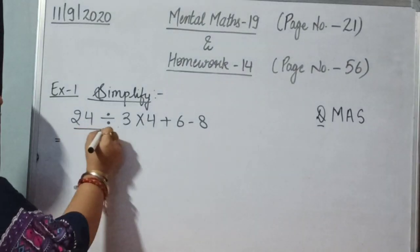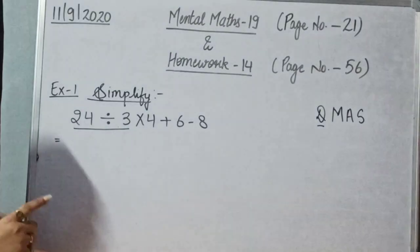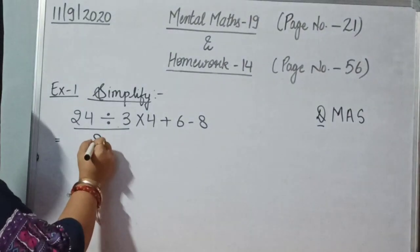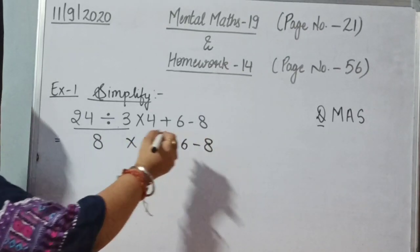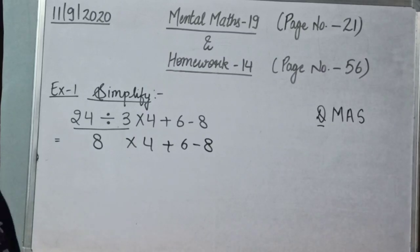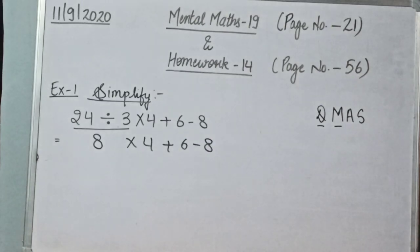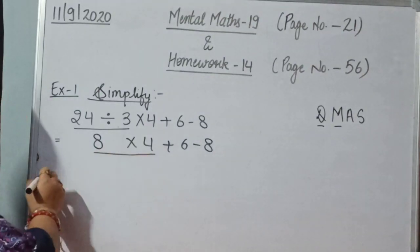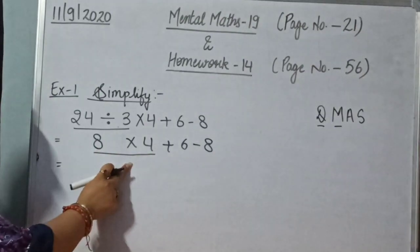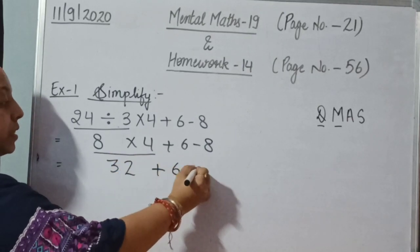We will find in which part of the question we need to divide. We need to divide 24 by 3. After dividing 24 by 3, we will get 8, and then rest will be copied as it is. Now the next step is multiply. We can see that we need to multiply 8 by 4. 8 fours are 32, and the rest will be same.